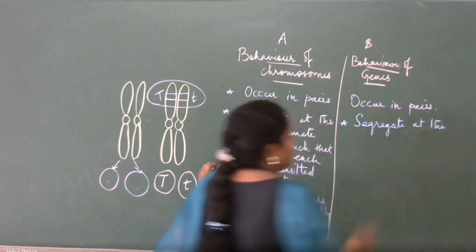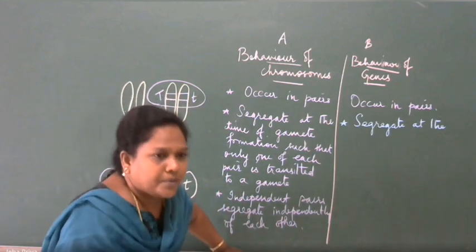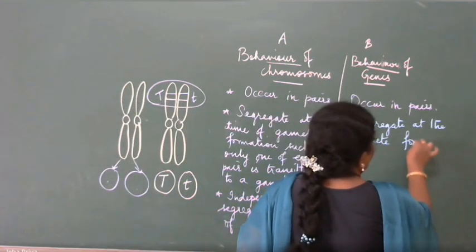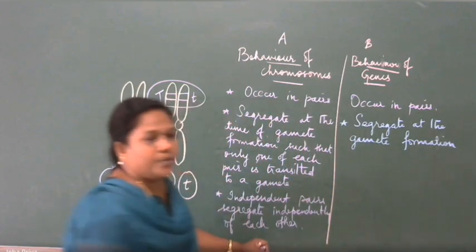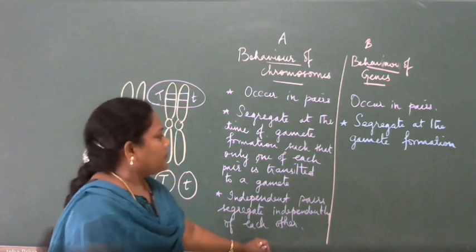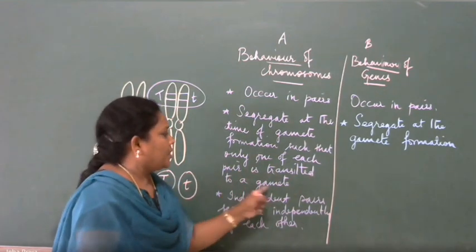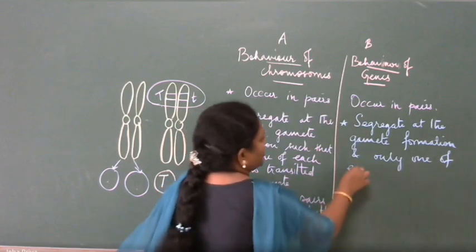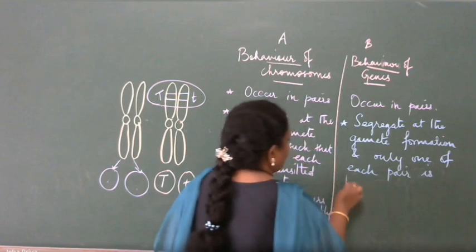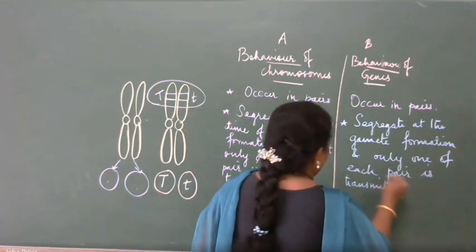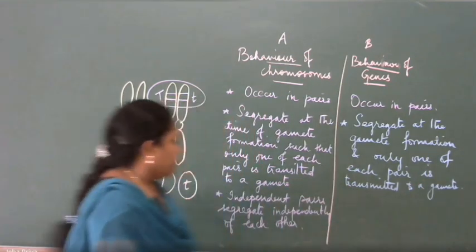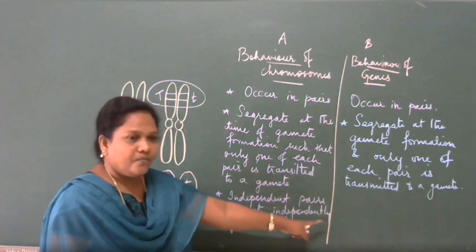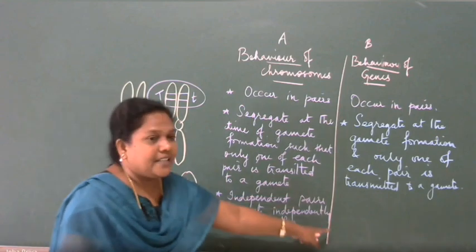This is very important — I am giving it only from your NCERT book; the statement I am writing here is only from your NCERT book. This column is very important for questions because MCQs will be based on this. One of each pair is transmitted to a gamete. For the third point: independent pairs segregate independently of each other, and the same way one allelic pair segregates independently of another pair.